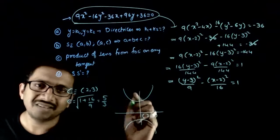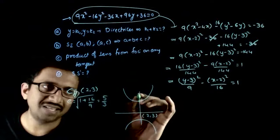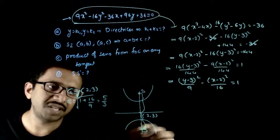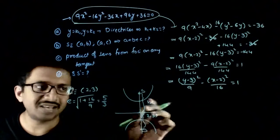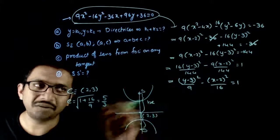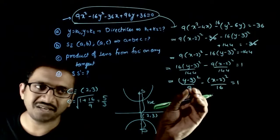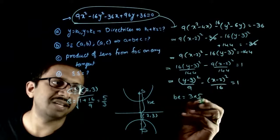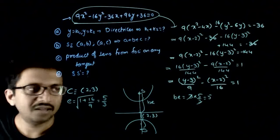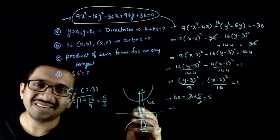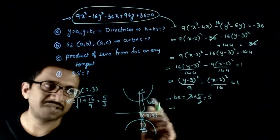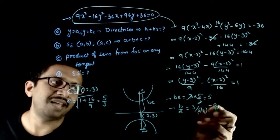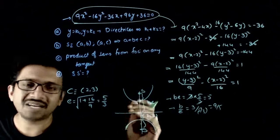Now, what is the value of ae? That is the distance between the foci and the center. ae equals the semi-transverse axis times e. The semi-transverse axis is 3, so ae = 3 × (5/3) = 5. And a/e, the distance of the directrix from the center, is 3 ÷ (5/3) = 9/5.